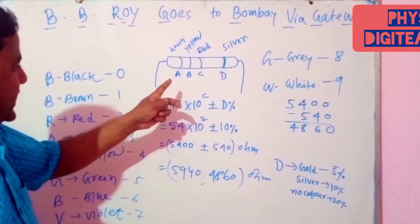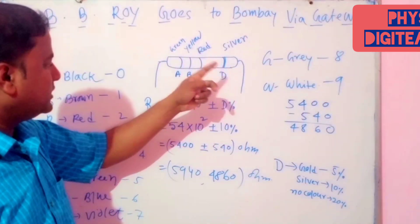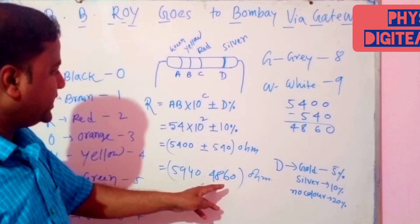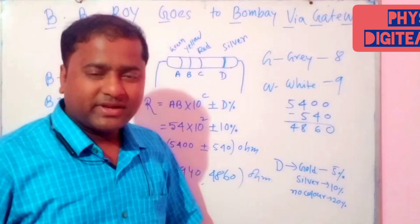Then, we see that, if the color bands are green, yellow, red, and silver, then the value of the resistance varies from 4860 ohm to 5940. It is very interesting. Is it not?